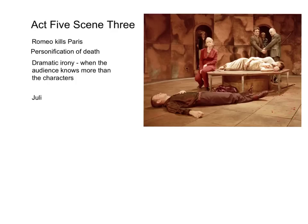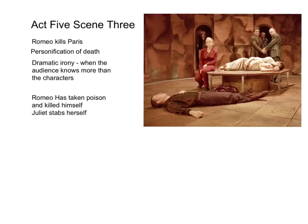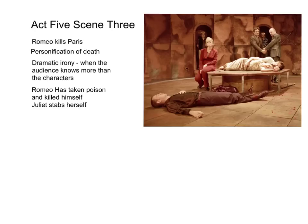Juliet looks at Romeo, realizes he's poisoned himself, and tries to kiss him to steal some of the poison off his lips, but it doesn't work. Then when she hears people entering the sepulchre, she takes his dagger and stabs herself, saying, 'O happy dagger!' — some personification there; she says, 'This is thy sheath. There rust, and let me die.' She stabs herself. Romeo has taken poison and killed himself, and then Juliet stabs herself. We're left with a scene of dead bodies strewn about everywhere. The watchmen come in and see all the dead bodies, and everyone else enters — the Prince, Capulet, Lady Capulet, and Montague.